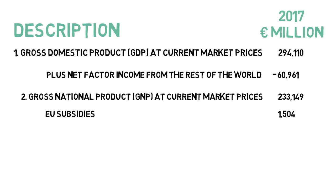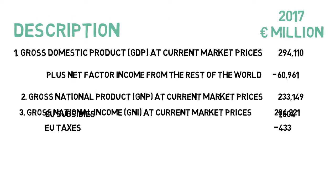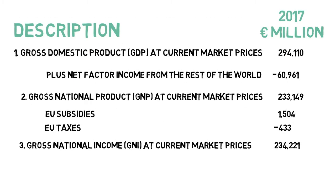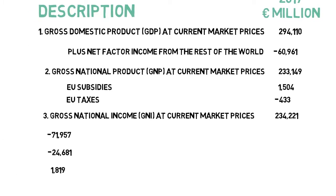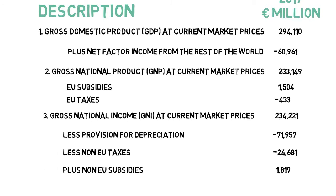We now move on to changing Gross National Product by EU subsidies and EU taxes. We add on the subsidies and take away the tax amount, and what that yields is a Gross National Income figure at current market prices — a slightly more accurate figure based on the income levels remaining in the country, adding in EU subsidies and subtracting EU taxes.